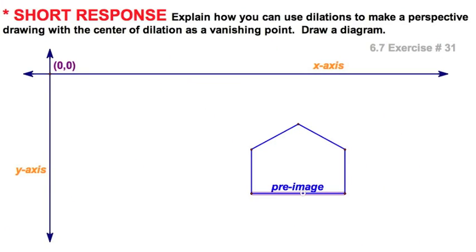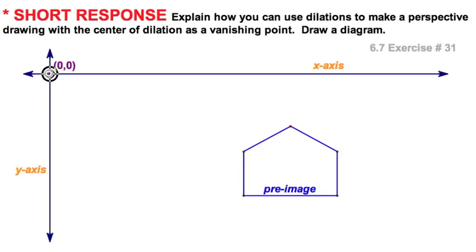Let's start with this pre-image down here, just like in the textbook, down in the fourth quadrant. Up here we've got the origin, and we're going to use that as our vanishing point.